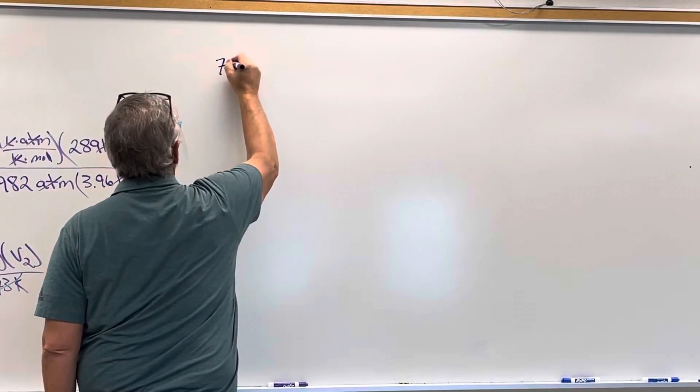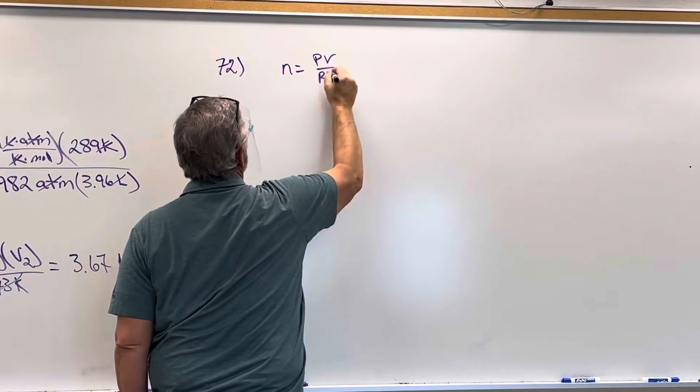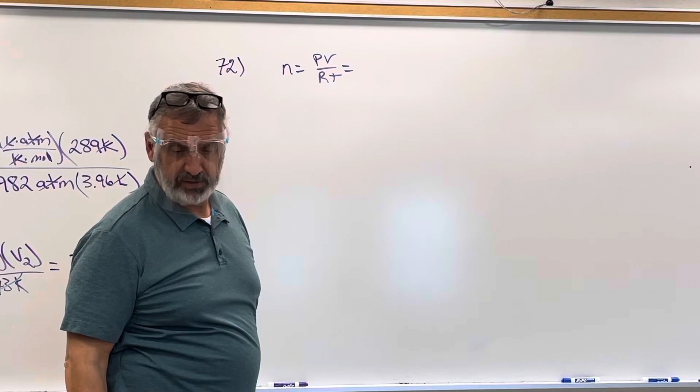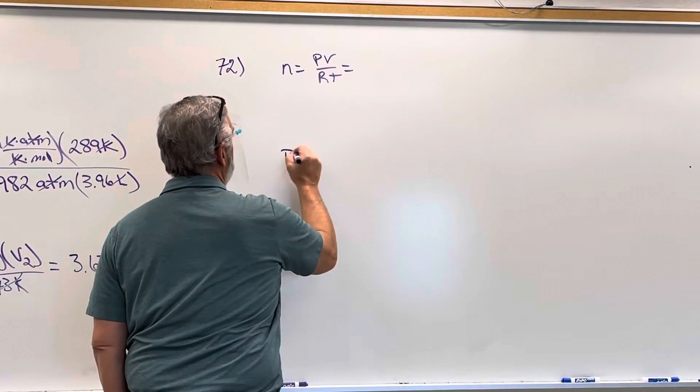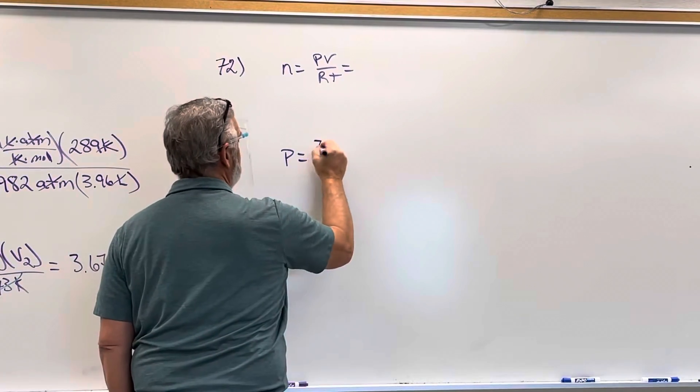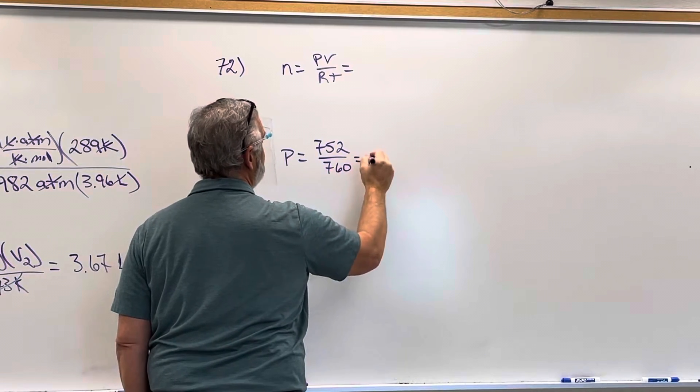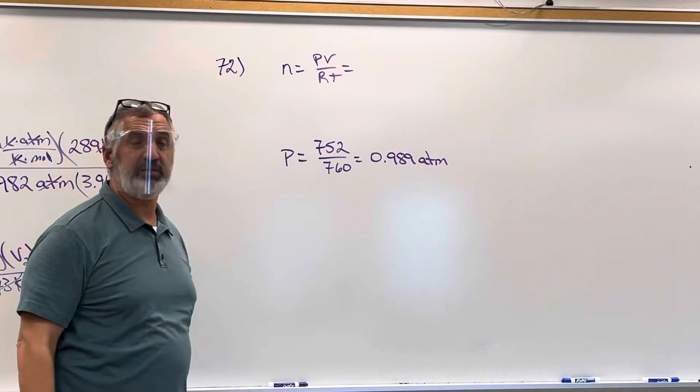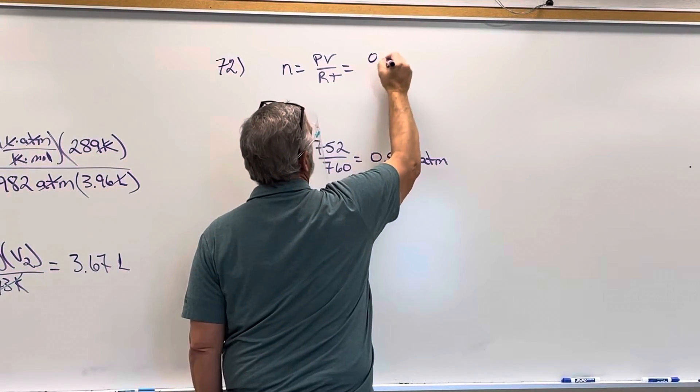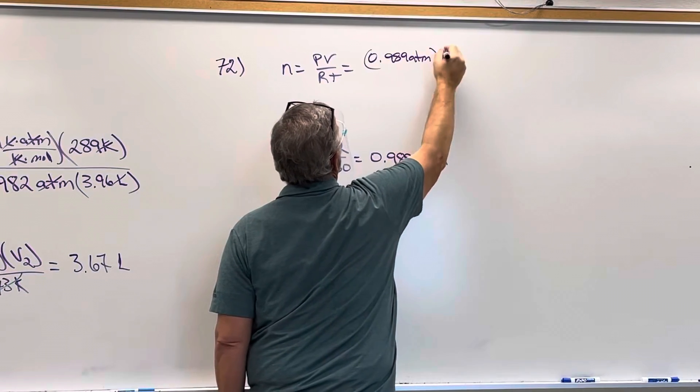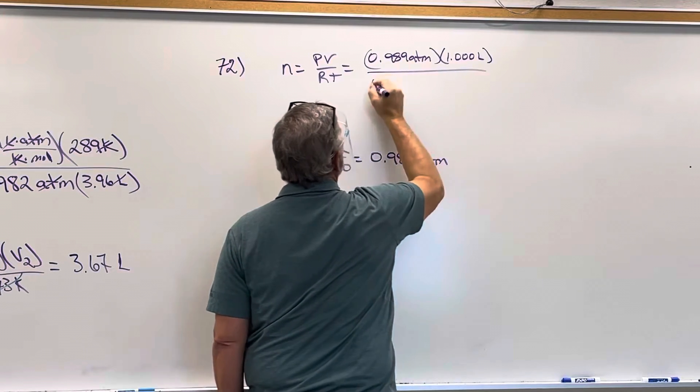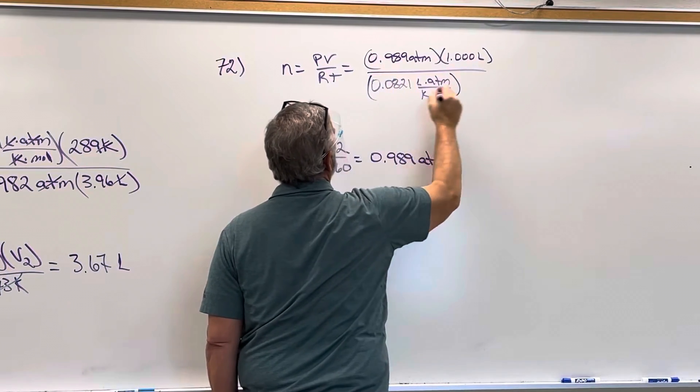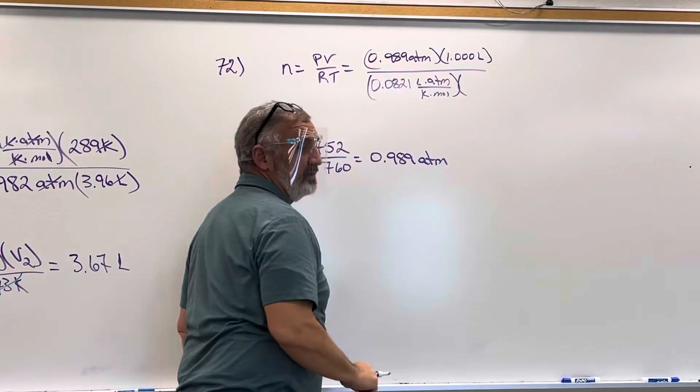So n equals PV over RT. The pressure is 0.989. You do 752 divided by 760, and what did it come out to? 0.989 atmospheres. We have to convert it to atmospheres if we're going to use R. The volume is one liter. R is always 0.0821 liter atmospheres per Kelvin mole. And the temperature is 32 plus 273, 305.